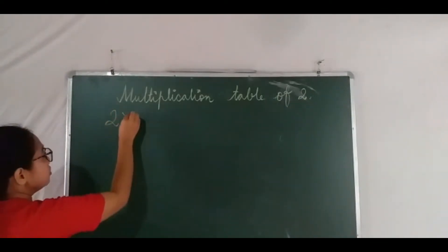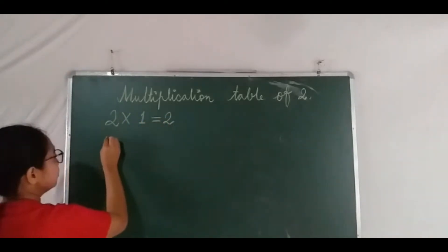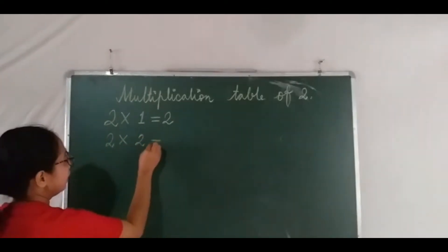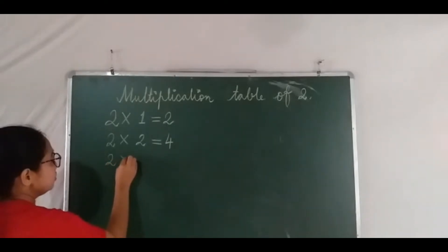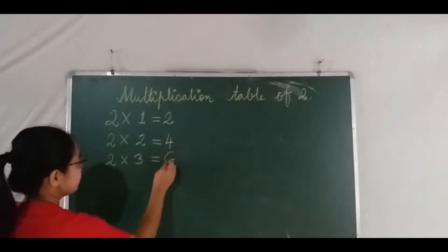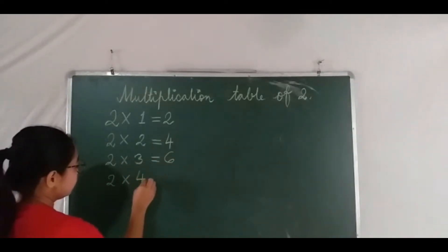Two ones are two, two twos are four, two threes are six, two fours are eight.